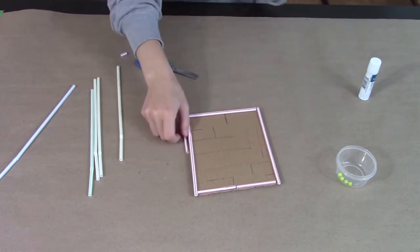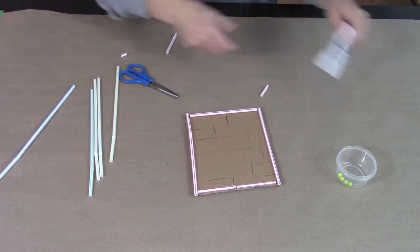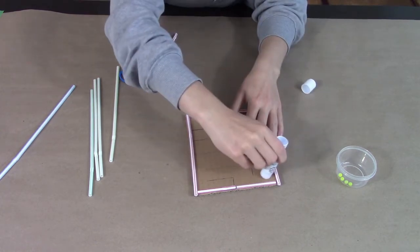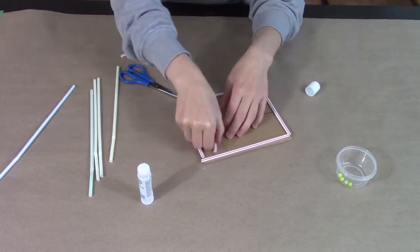Then once you have that border complete, you're going to start making your maze. We decided to draw ours out beforehand to make sure that it would work. So you could do that or you could just start gluing as you go and seeing how the straws lay out.